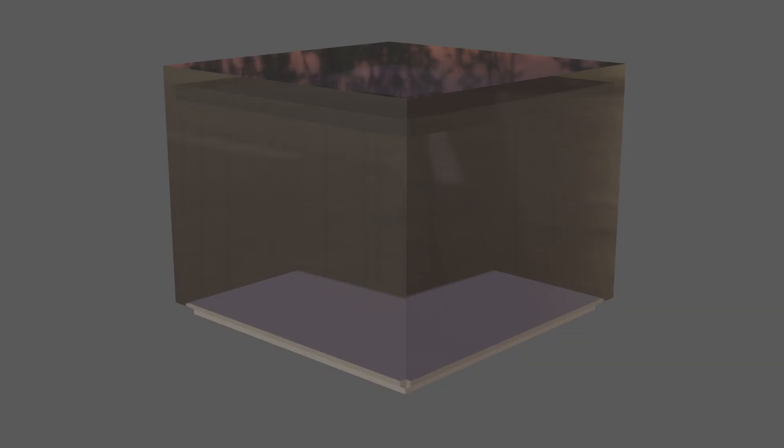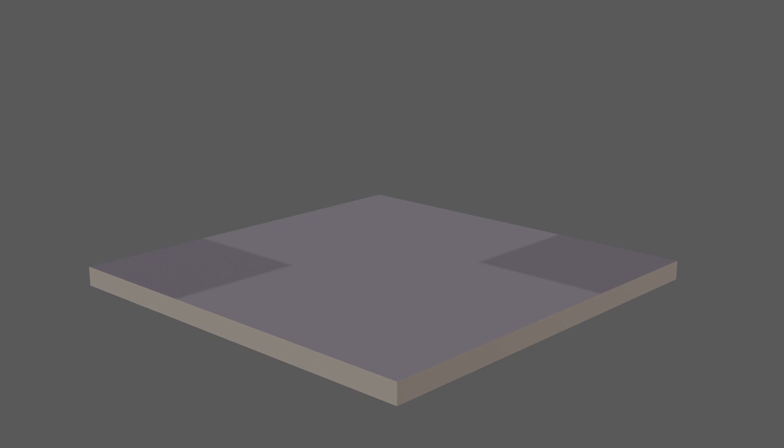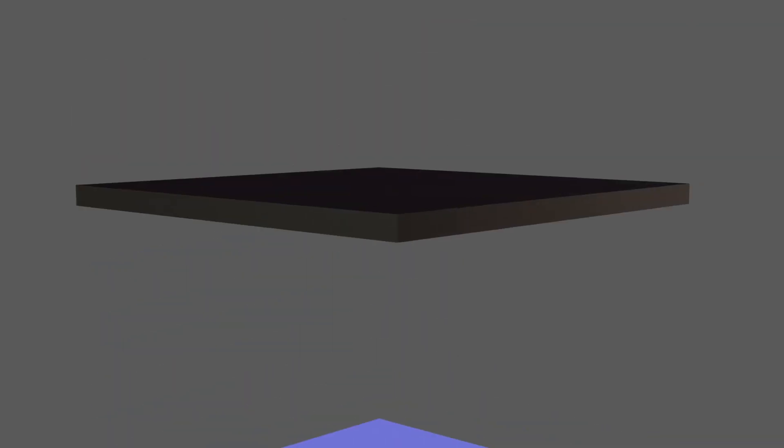The cloud chamber consists of a sealed glass container and a platform on the bottom which is cooled to help the condensation, and a platform on the top to provide heat. The chamber is filled with saturated isopropyl alcohol vapors.